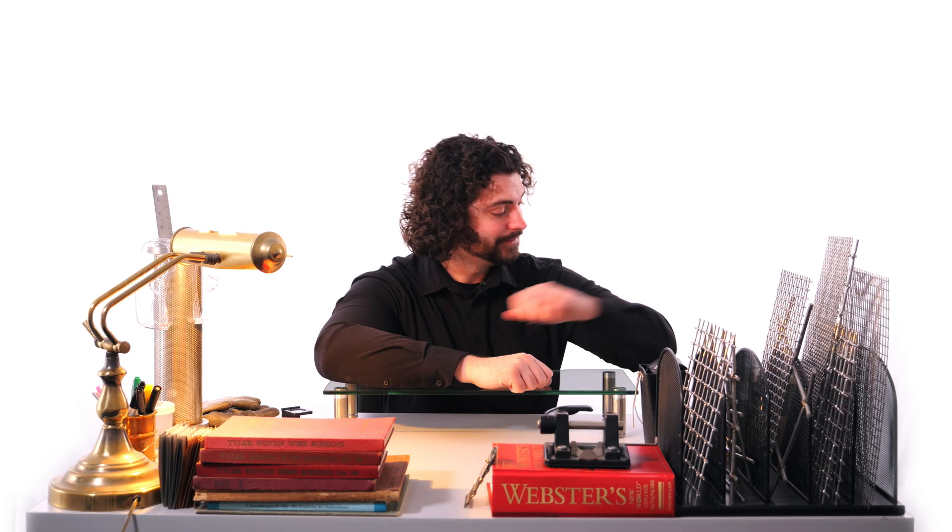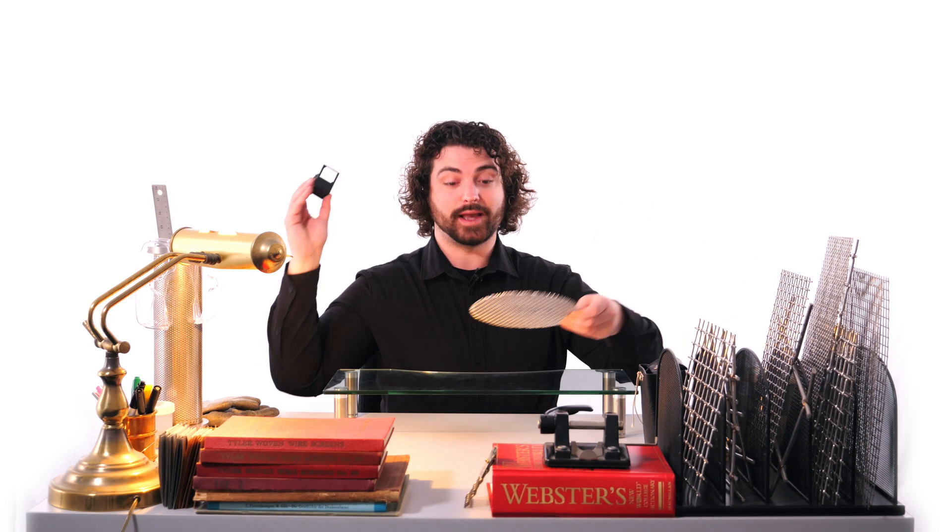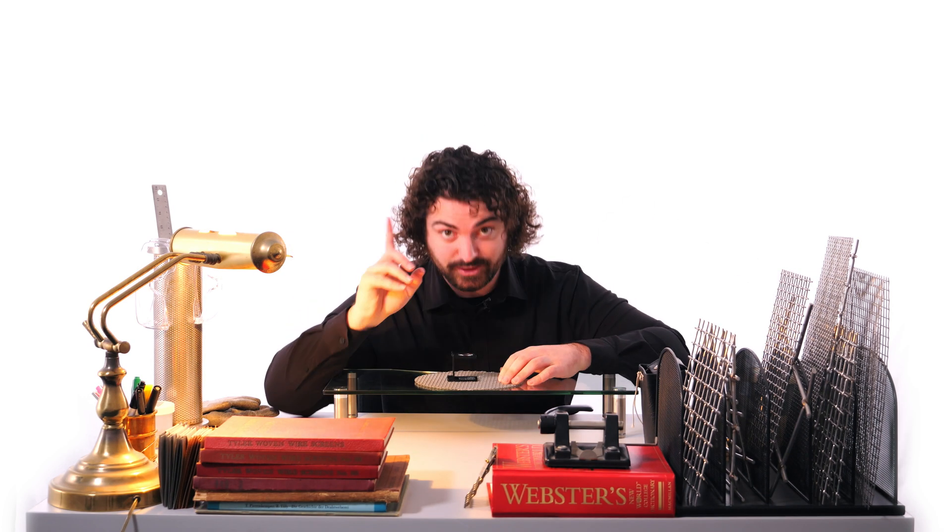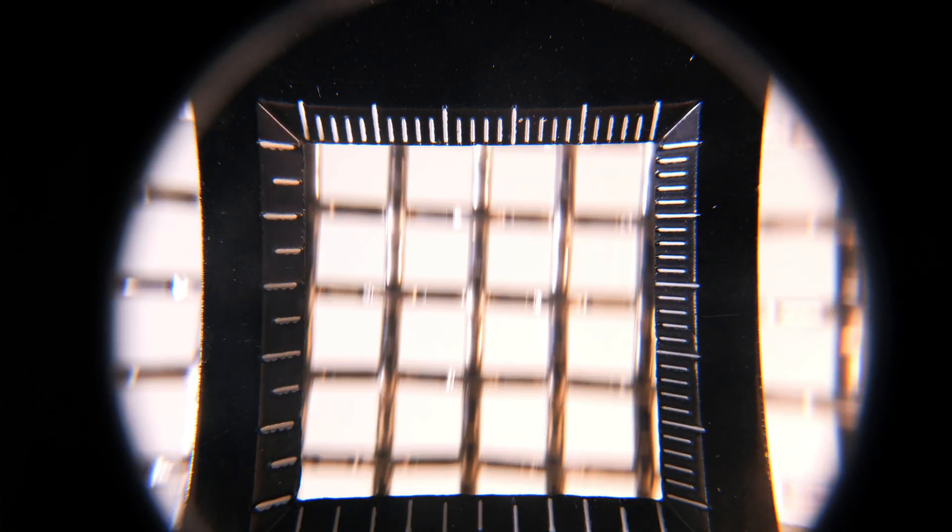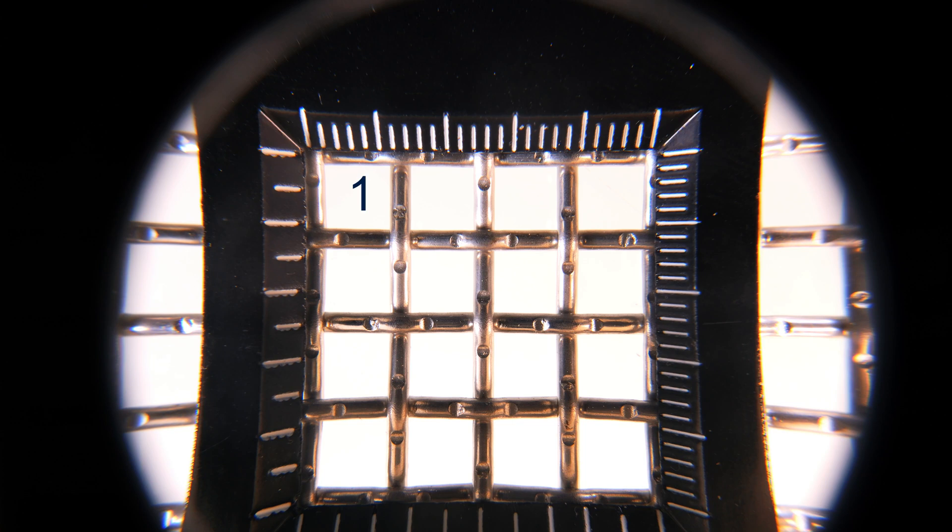But my goodness. How in the world do you calculate ultra fine mesh counts like that? Well, let's start with the coarser mesh and we'll go from there. So just like before, we take our counting glass and we set it on the mesh. And this one's really easy. So if we just line this up real quick, you count one, two, three, four, and boom. It's a four mesh. Simple enough, right?